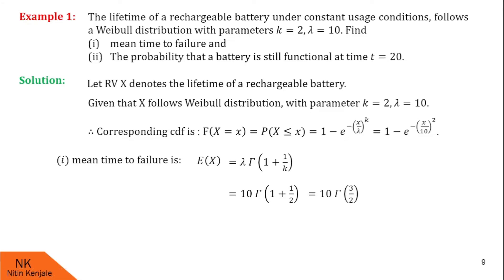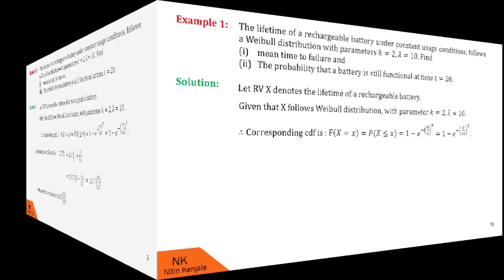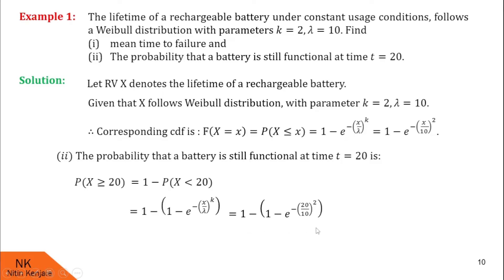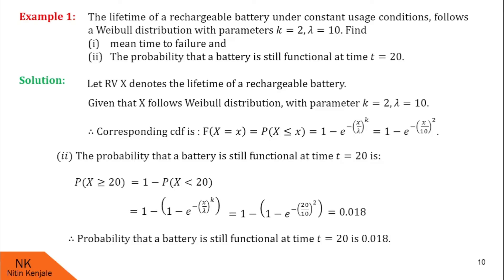Next we find the probability that the battery is still functional at time t equal to 20. This is P(X ≥ 20), since x indicates the lifetime of the battery. Using the complement formula, P(X ≥ 20) = 1 minus P(X < 20). Using the CDF formula, P(X < 20) = 1 minus e^(−(20/10)²). Using a calculator, P(X ≥ 20) equals approximately 0.018. So this is the required probability.